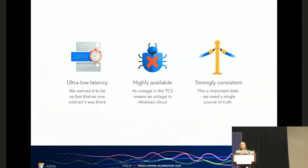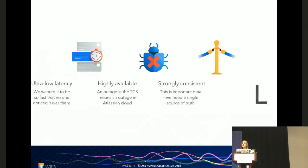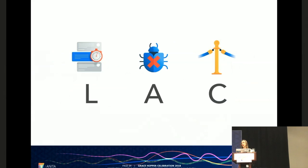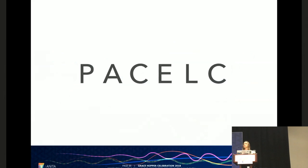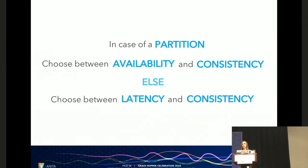But we start to run into some problems when we look at these three requirements. Because we've just asked for low latency, high availability, and strong consistency. And that's actually not possible according to the PAC-ELC theorem, which states that in the case of a partition you'd have to choose between availability and consistency. Else choose between latency and consistency. So for those of you familiar with the CAP theorem, this is just an extension of that. But for everybody else, there's just a whole bunch of words which basically says you have to make compromises if you want availability, consistency, and latency.